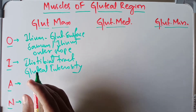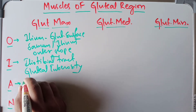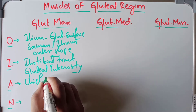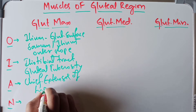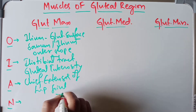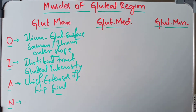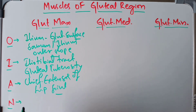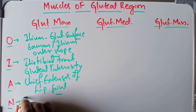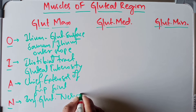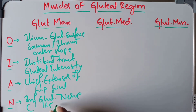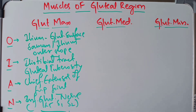The gluteus maximus is the chief extensor of the hip joint. Its nerve supply comes from the inferior gluteal nerve, arising from spinal segments L5, S1, and S2 of the sacral plexus.